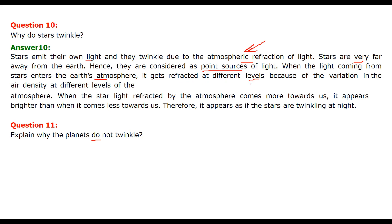When light is coming from stars and enters earth atmosphere, it gets refracted at different levels because of variation in air density, temperature, pressure at different levels of the atmosphere. When the star light refracted by the atmosphere comes more towards us, it appears brighter. When it comes less towards us, it appears less bright. So it appears that stars are twinkling at night.